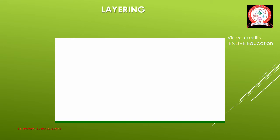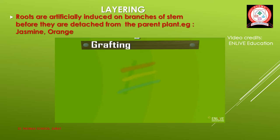In this module we will see grafting and layering. In grafting, parts of two plants are joined so that they grow as one plant. The rooted supporting portion of one plant is called the stock, and the twig of another plant is called the scion. Example: rose, apple, peach, etc. In the layering method, roots are artificially induced on branches of a stem before they are detached from the parent plant. Examples: jasmine, lychee, grapevine, etc.